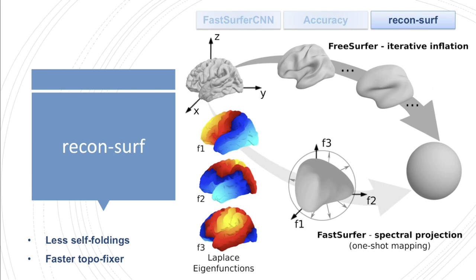Within Recon-Surf, we introduce an alternative to FreeSurfer's traditional iterative spherical inflation process. We precisely perform a one-shot spectral embedding using the first three non-constant eigenfunctions of the Laplace-Beltrami operator to parameterize the surface smoothly. We then quickly generate the final spherical map by scaling the 3D spectral embedding vector to unit length, which reduces cell foldings and results in a slightly faster topology fixer.